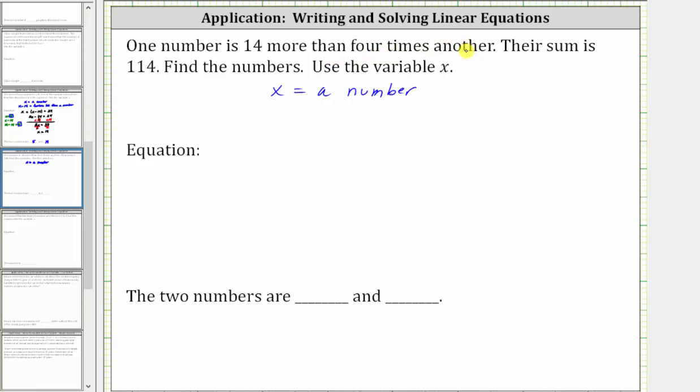Well, four times x is four x, which means 14 more than four times x would be four x plus 14. The expression four x plus 14 is equal to 14 more than four times a number.